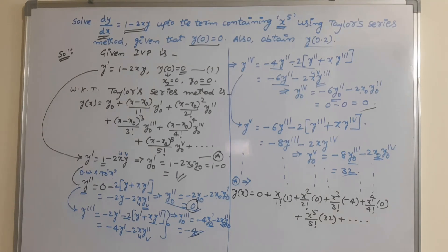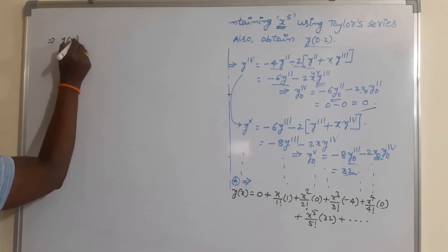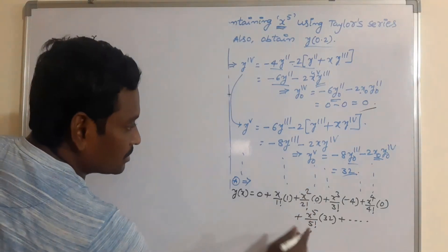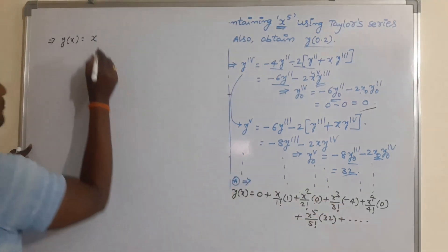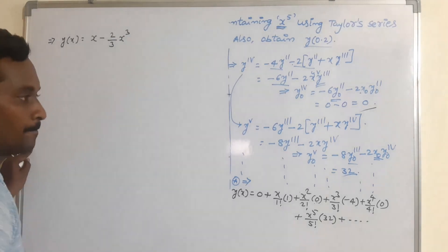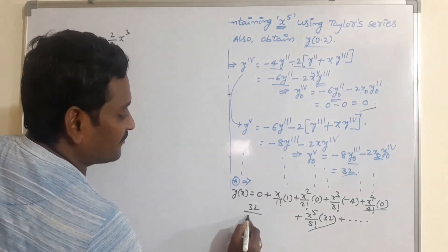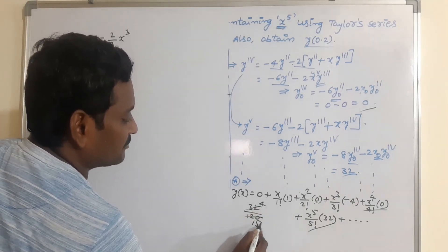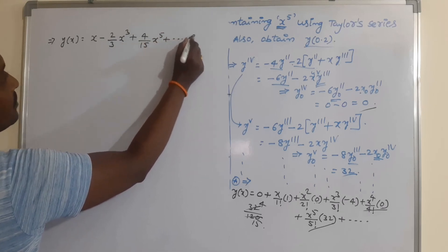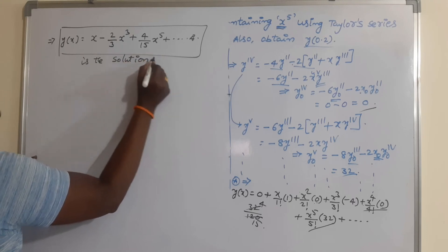Simplifying the terms in the series: y(x) = x minus (4/6)x³ + (32/120)x⁵ + ... which simplifies to y(x) = x minus (2/3)x³ + (4/15)x⁵ + ... This is the solution of the given initial value problem.